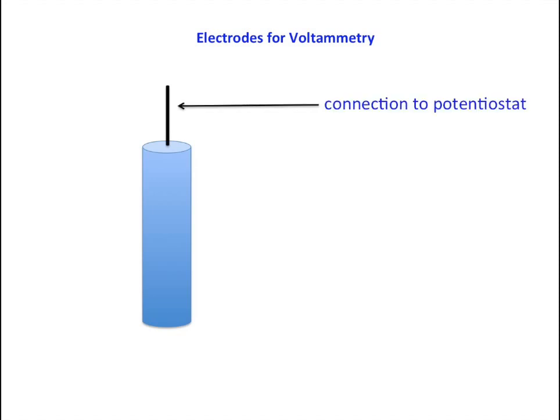In this video, we're going to look at some electrodes that are commonly used in voltammetry experiments. In cyclic voltammetry, the electrodes are stationary.